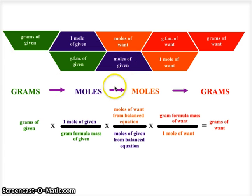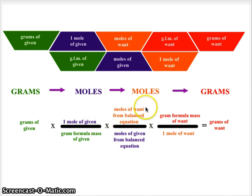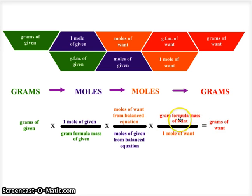The setup is: grams of given, times one mole of given over the gram formula mass of the given, times the moles of what we want over the moles of what we were given. This fraction in the center is always the mole ratio, and the mole ratio always gives us values from the coefficients of the balanced chemical equation. This bridge lets us go from one substance to another. We end with the gram formula mass of what we want over one mole, giving us grams of what we want.